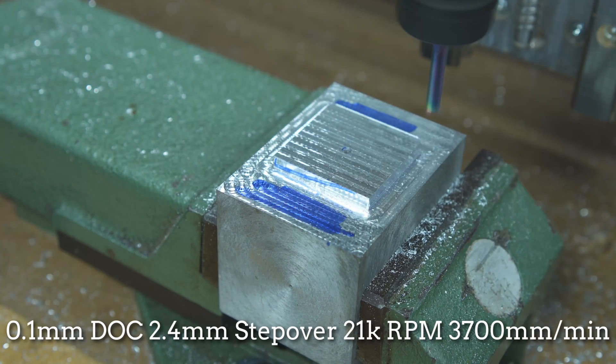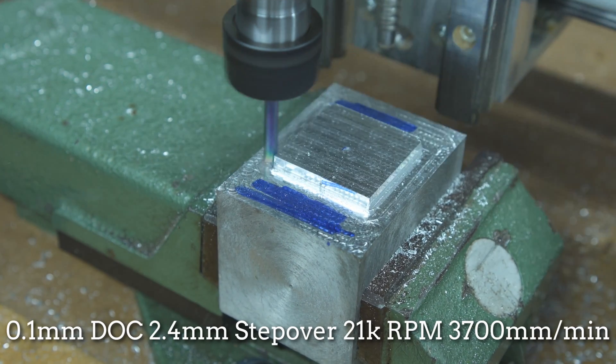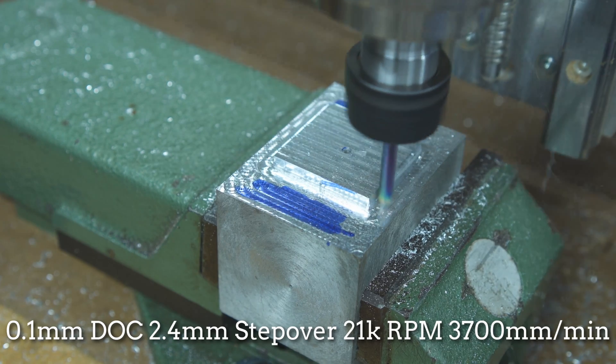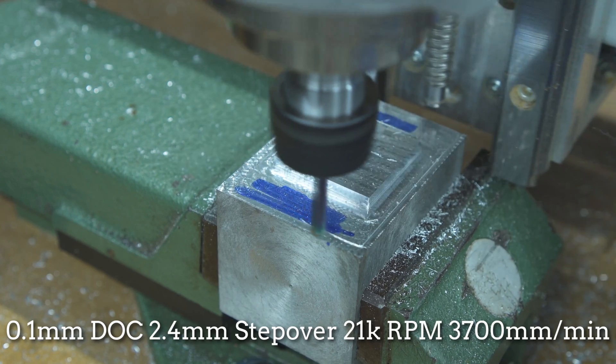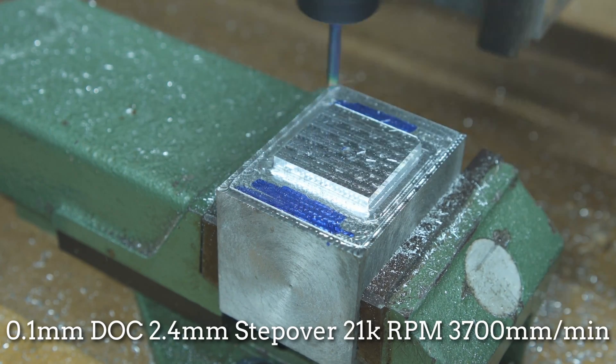After seeing the 2 millimeter depth of cut also working fine I got a little cocky. So I surfaced the top, I contoured the sides and also did a 0.1 millimeter pass on the bottom to get a nice and shiny finish.